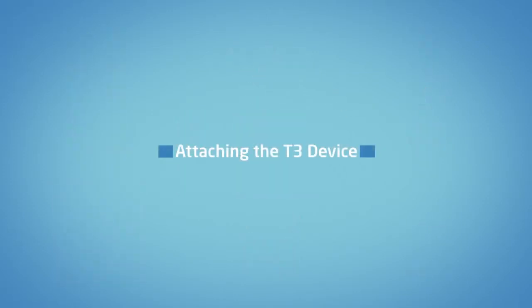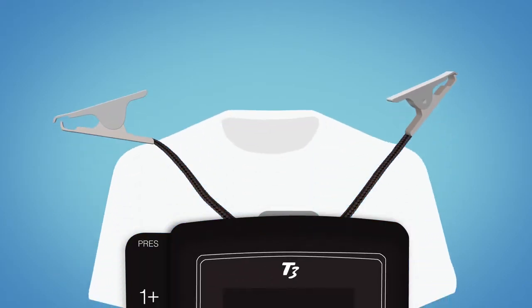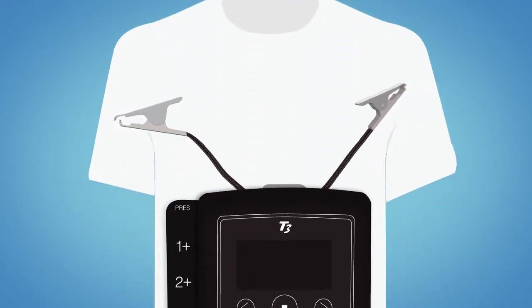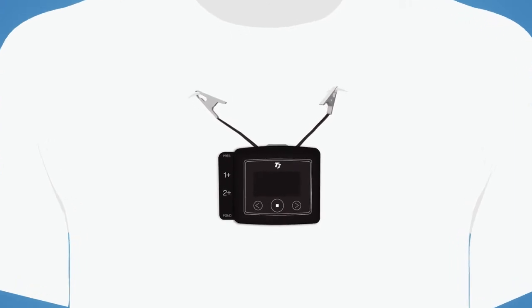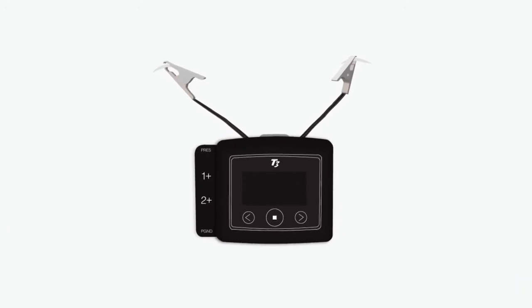Attaching the T3 device to your t-shirt. Snap the two alligator clips of the T3 device close to the collar of your t-shirt, so the T3 device is over your chest. Make sure the device display faces forward.